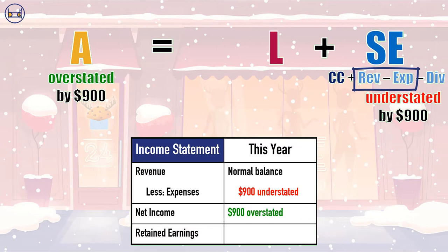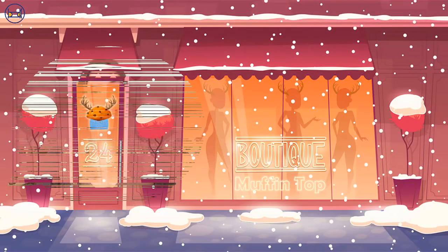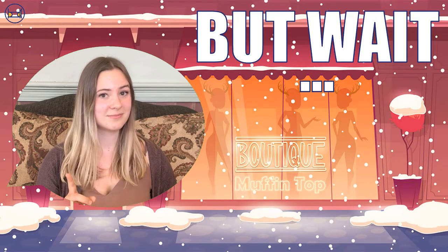Net income will be reported as $900 higher than it really is. But that's not all. The company's net income is closed to its retained earnings at the end of the period, since net income increases the value in our retained earnings account. So overstating net income by $900 will cause the balance in our retained earnings account to be overstated by $900 as well. This silly mistake in forgetting to make an adjusting entry to our insurance sure is getting out of hand. But wait, there's more.